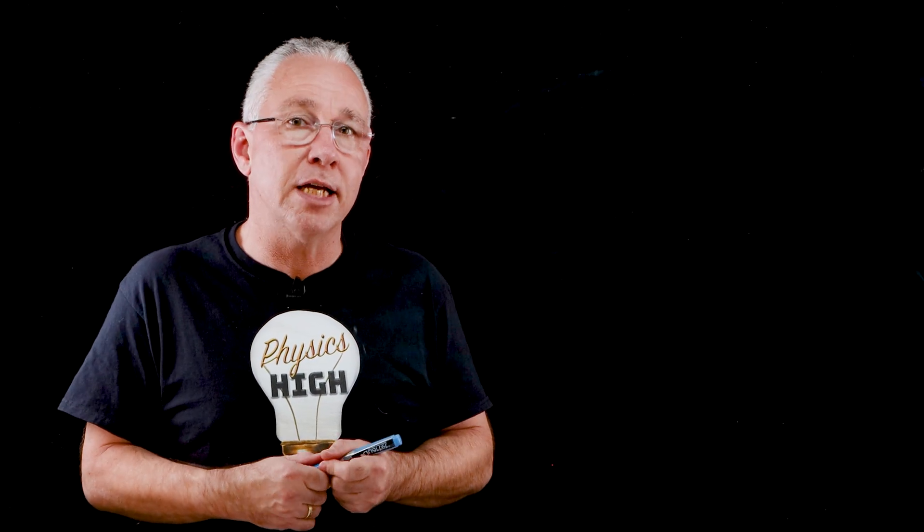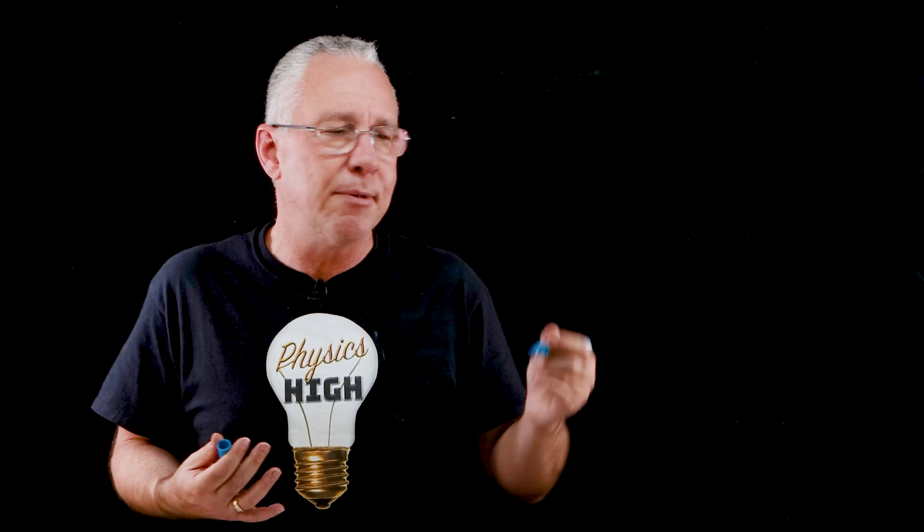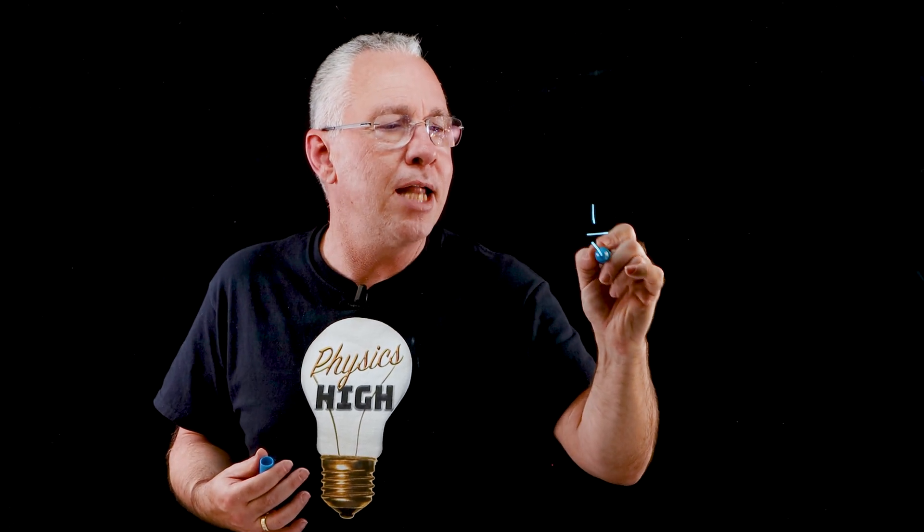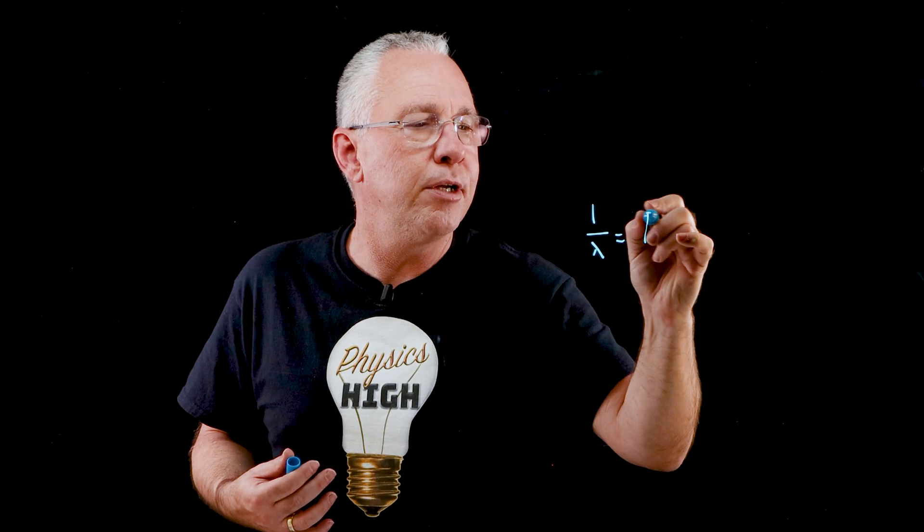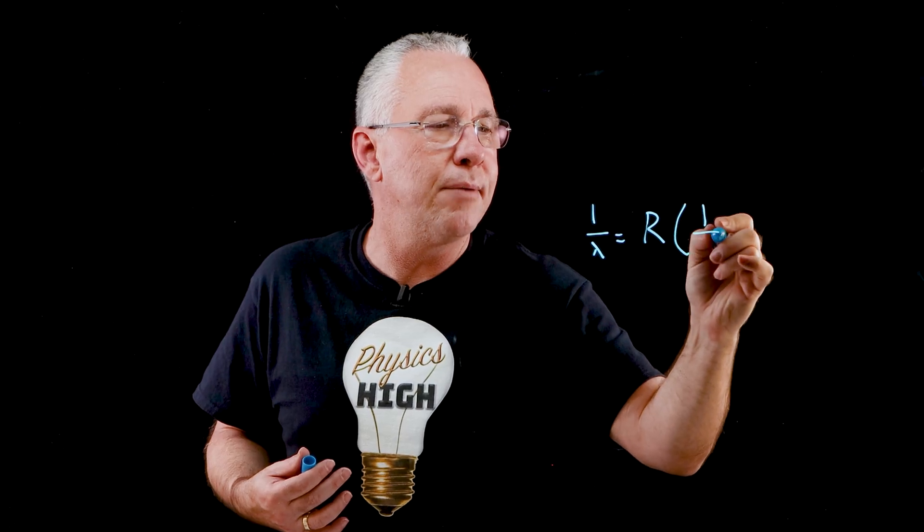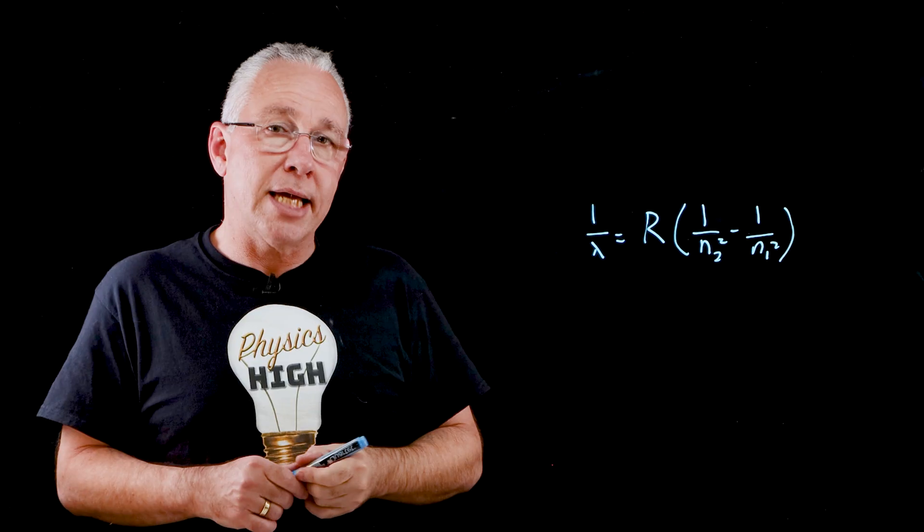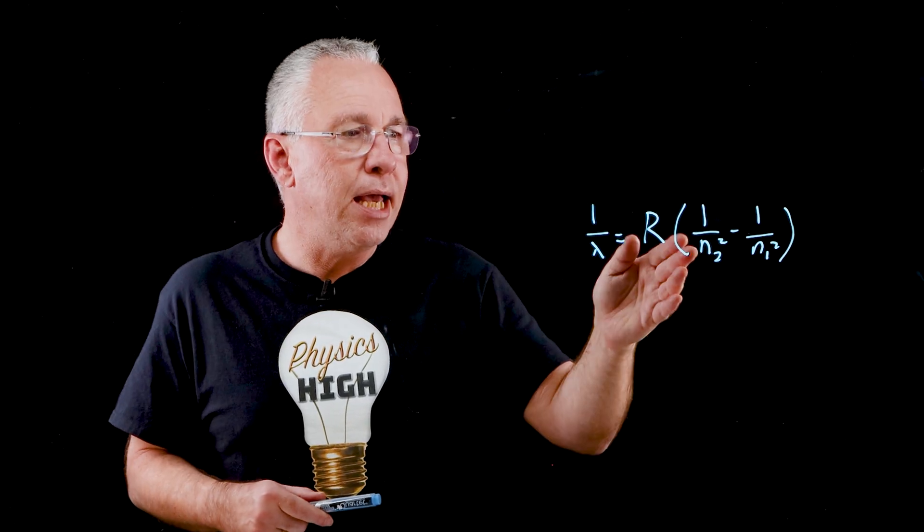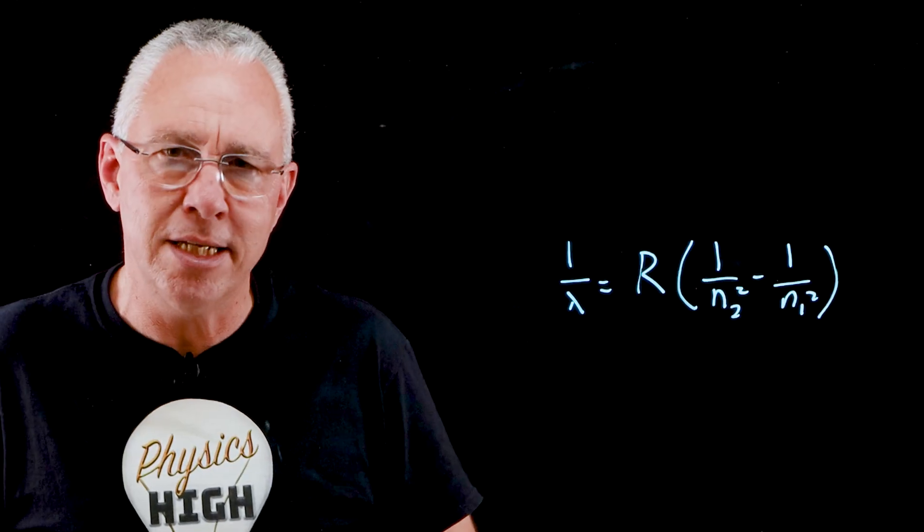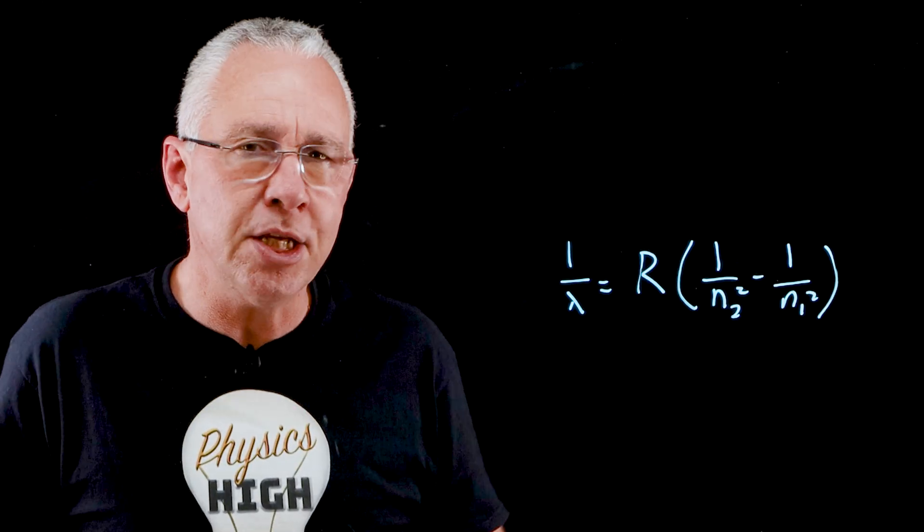Mathematically, the emission and absorption spectrum can be described, as done by Rydberg and Balmer for hydrogen, as 1 over lambda is equal to the Rydberg constant multiplied by 1 over N2 squared minus 1 over N1 squared. In the case of Bohr, N2 and N1 aren't just integers anymore. They are the energy levels.